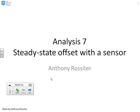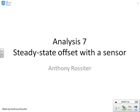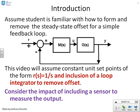This is the seventh video looking at steady state offsets. In this video, we're going to consider what happens when you add a sensor into the loop. First, let's assume the student is familiar with how to form and remove the steady state offset for a simple feedback loop like the one shown here.